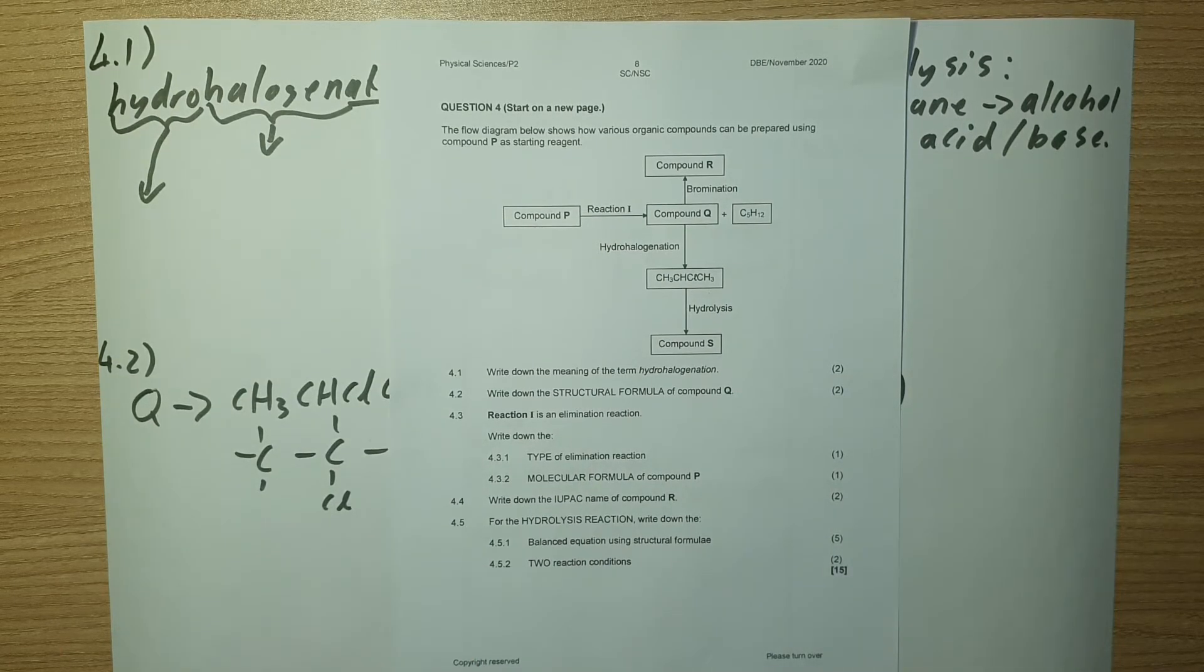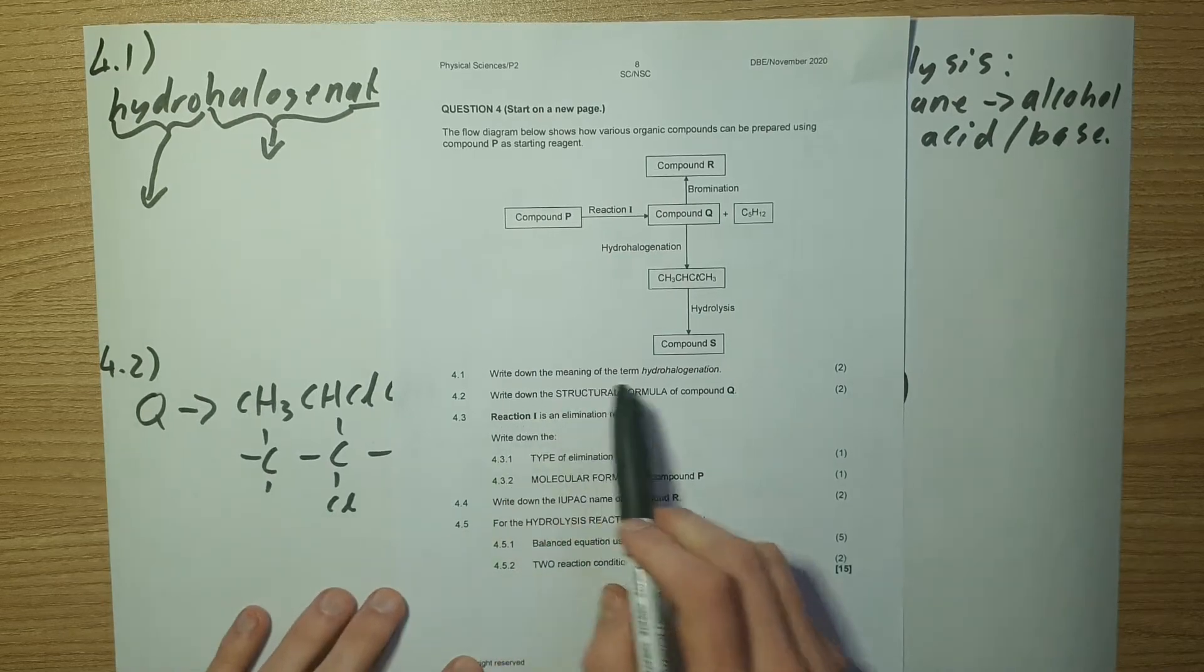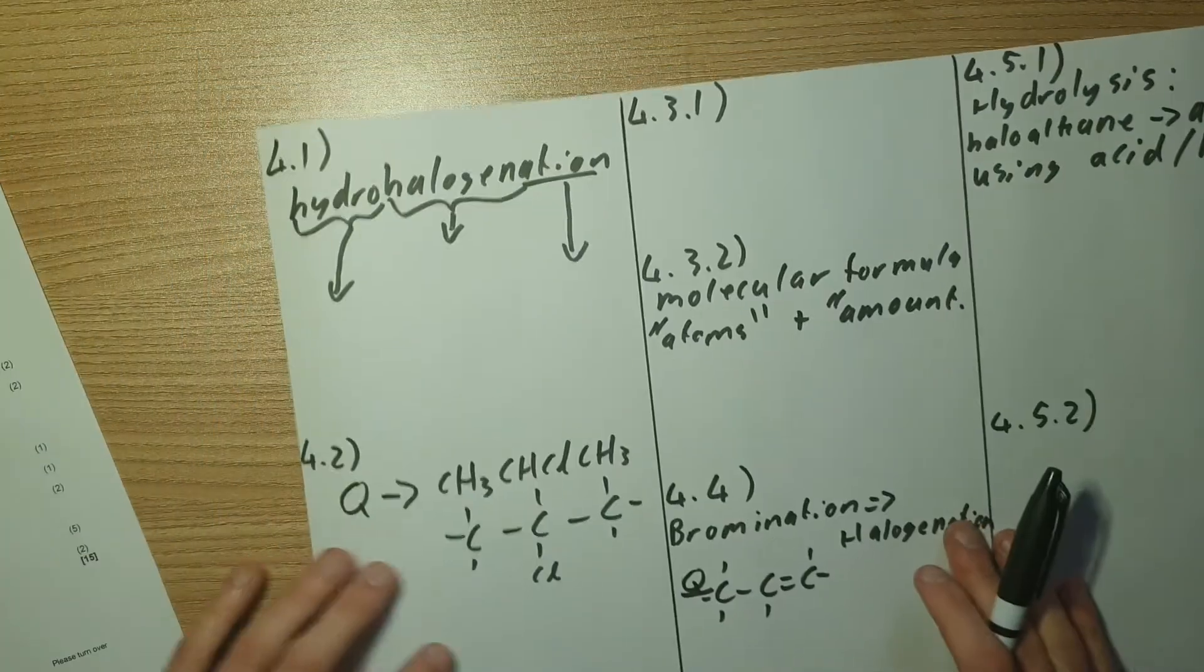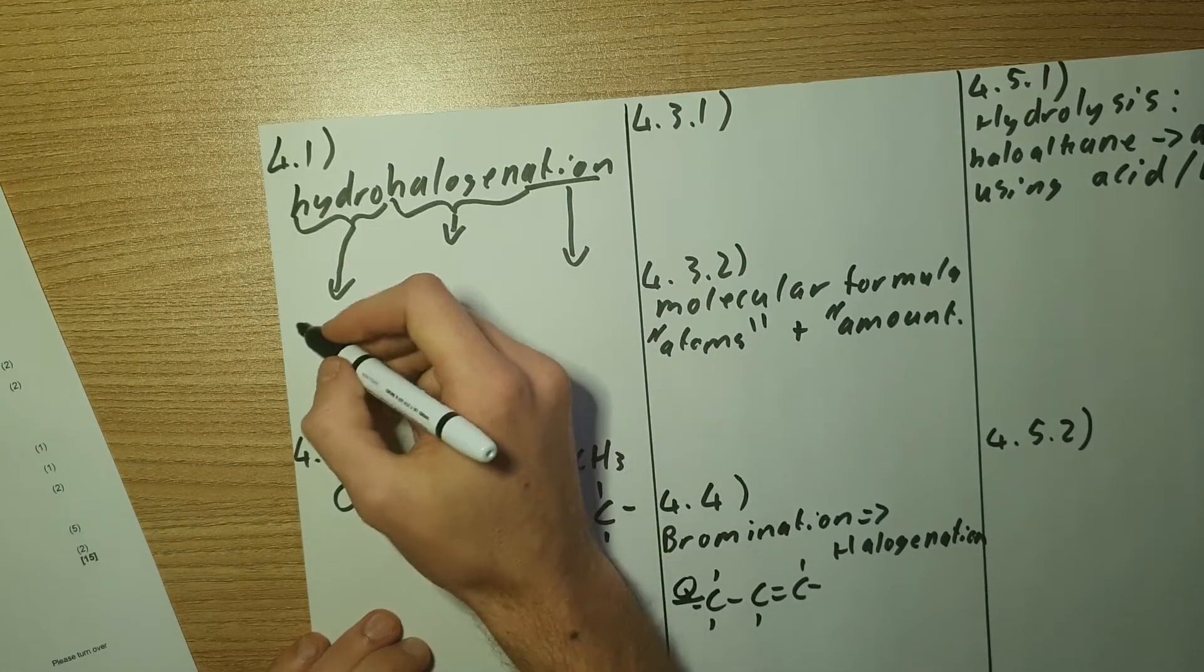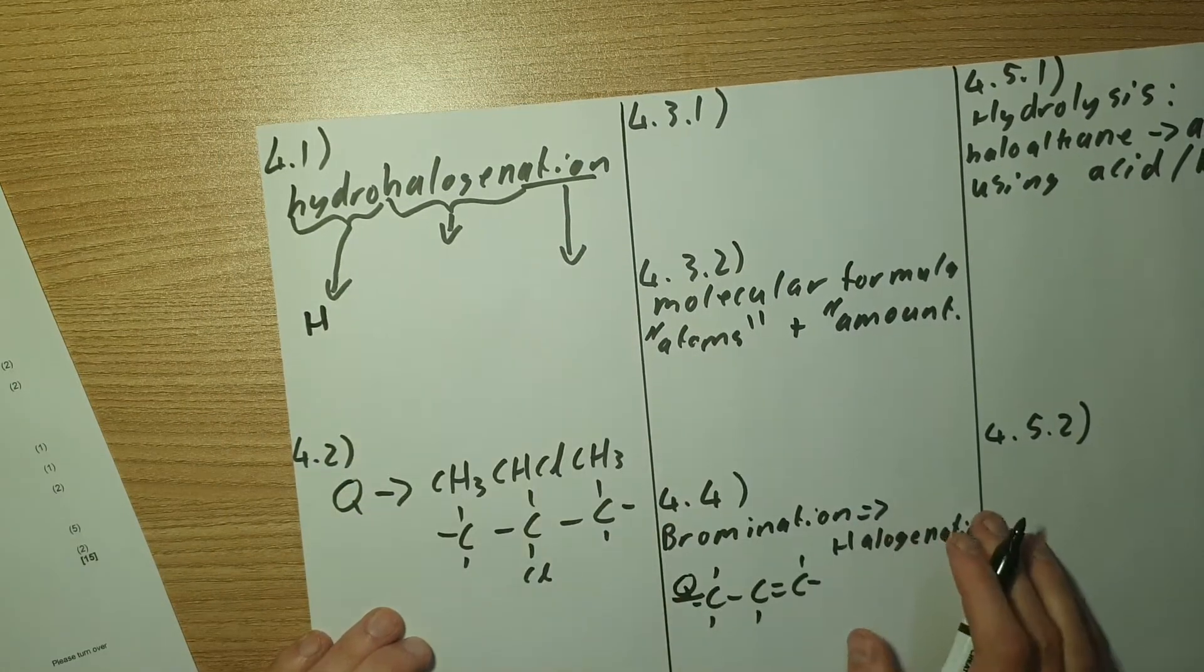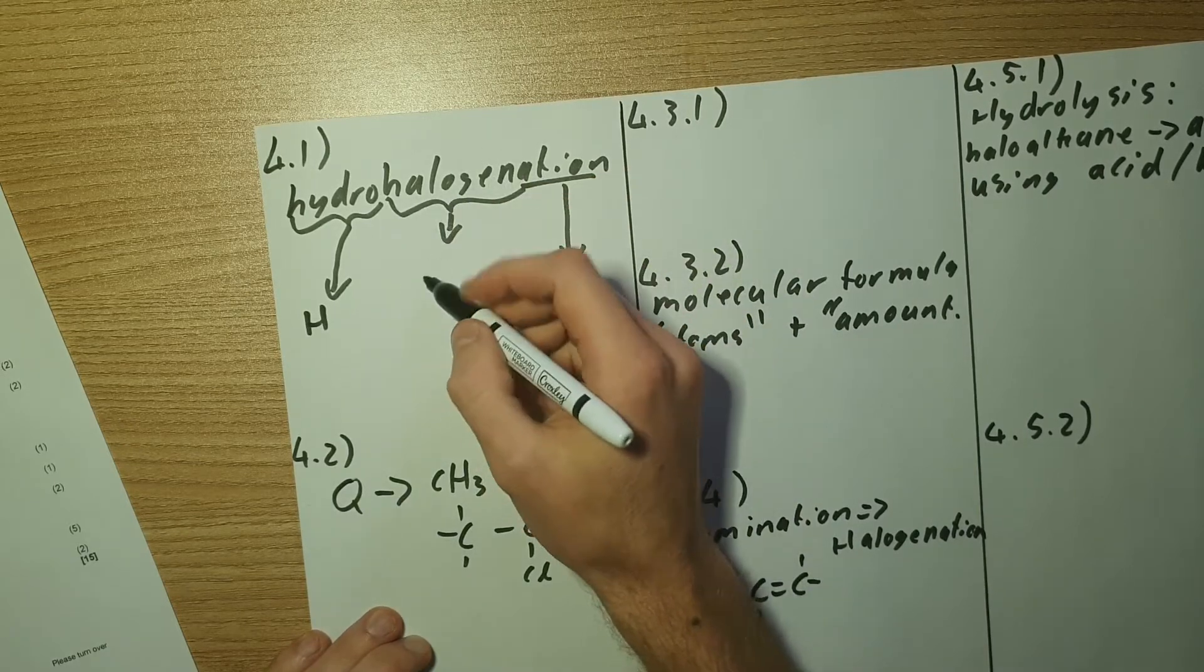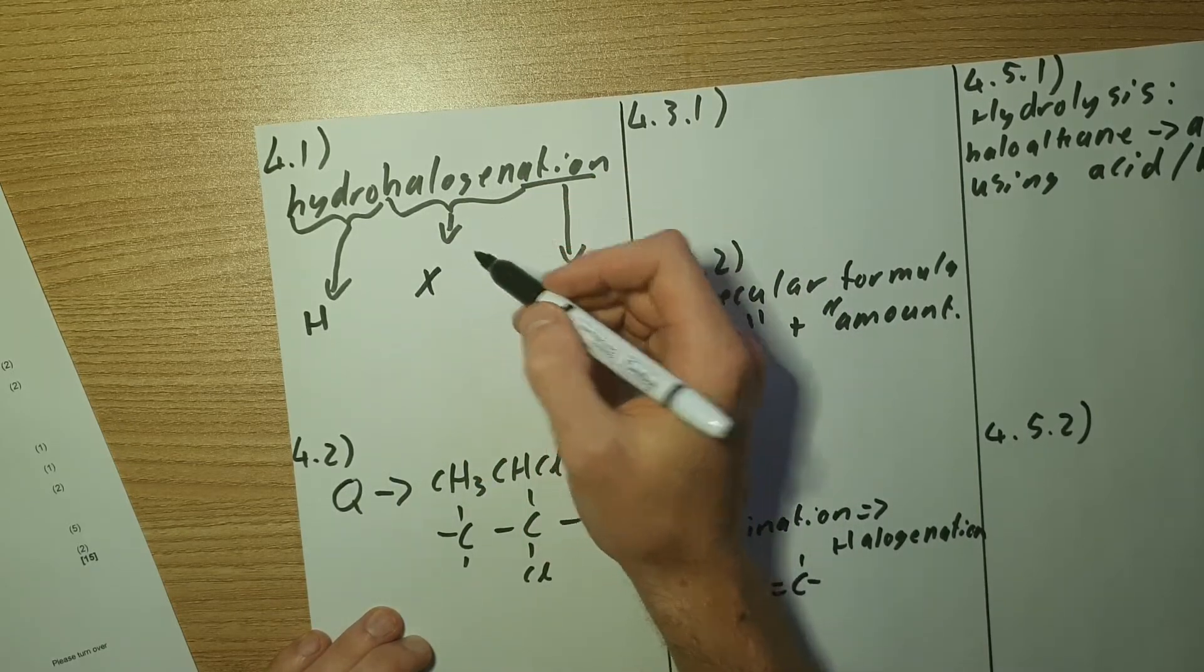Let's have a look. 4.1 says write down the meaning of the term hydrohalogenation. Okay so let's break up the word. So hydro means hydrogen, halogen there's in the name so we have a halogen that's normally represented by an X.